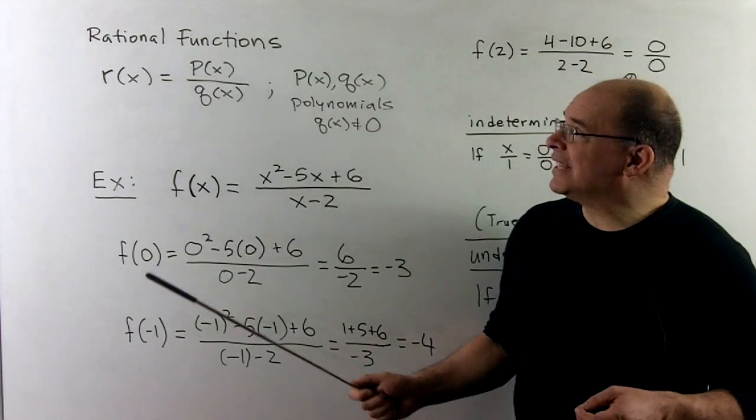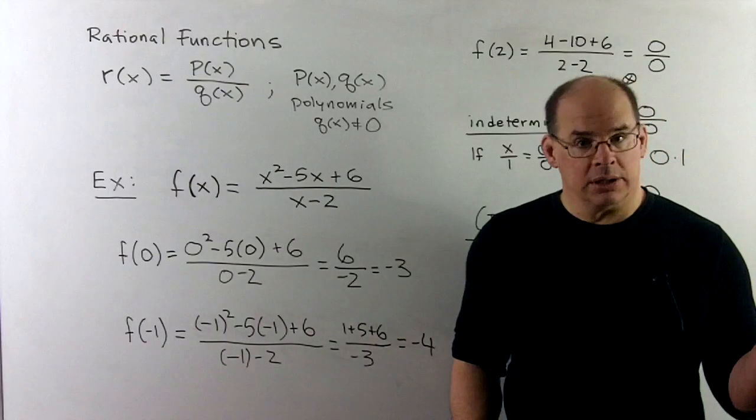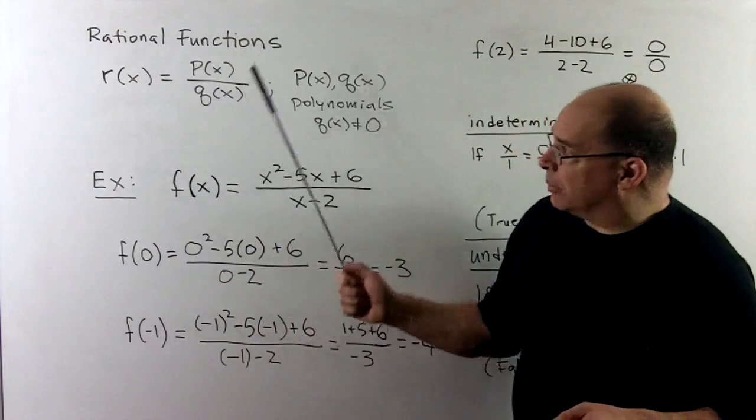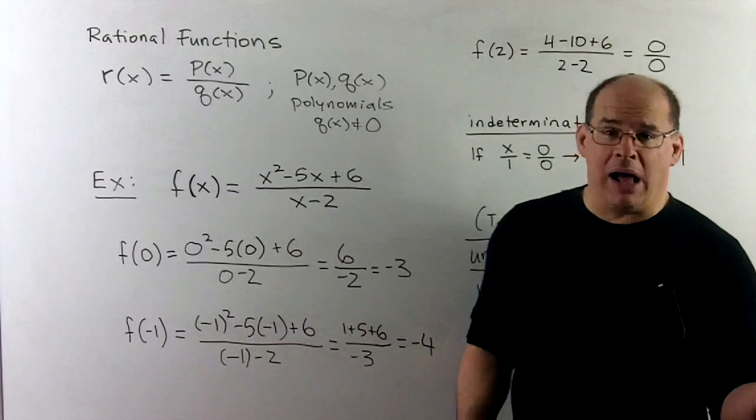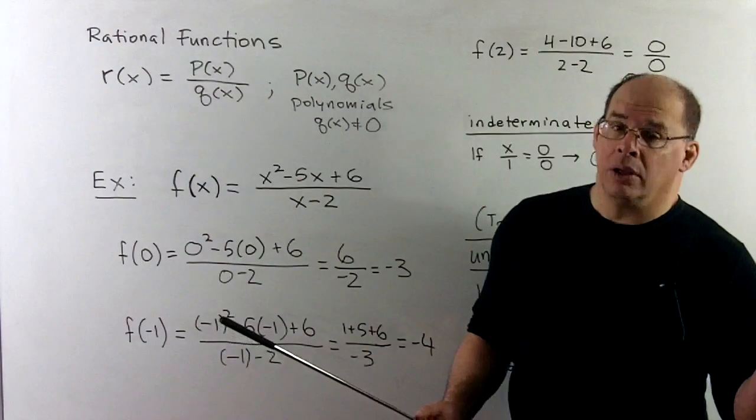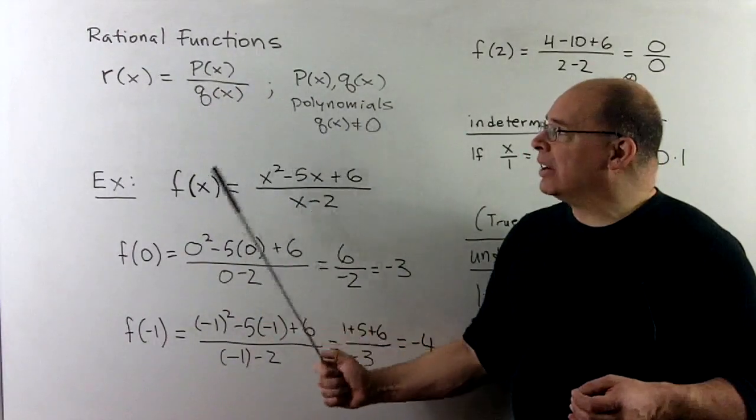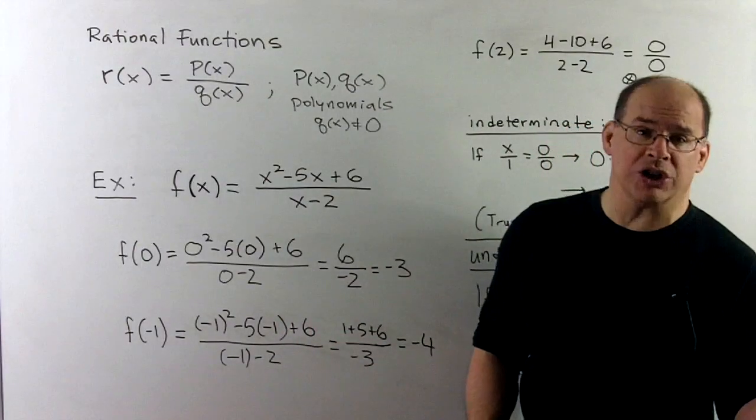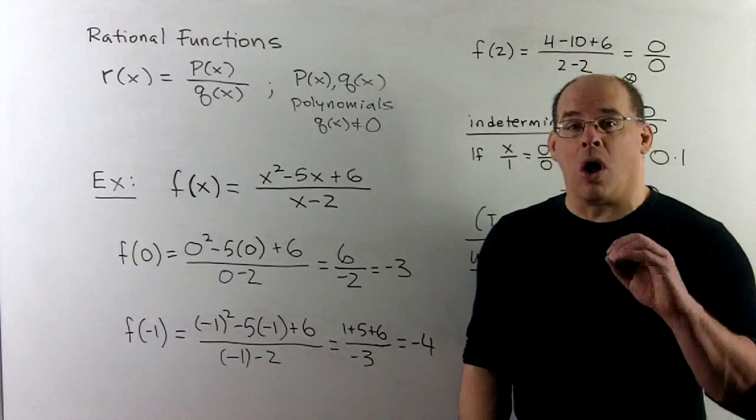For this section, we investigate rational functions. To get a rational function, we have r(x) equal to p(x) over q(x). p(x) and q(x) are just going to be polynomials. One restriction: I can't have that function in the denominator, the q(x), be exactly equal to the zero function. So q(x) can have zeros, I just can't have it all zero.